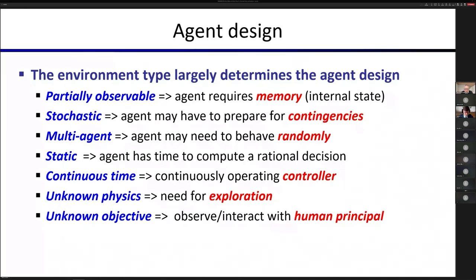And maybe I'll just mention the last one. If the system doesn't know what objective it's supposed to be pursuing, but is designed so that it wants to help a human being achieve the human's objective, then there's going to have to be a closed loop interaction with the human. And this connects up with principal agent games in economics.